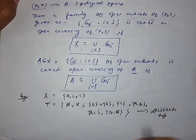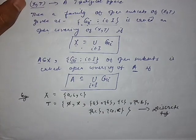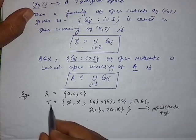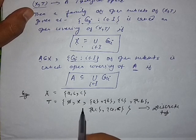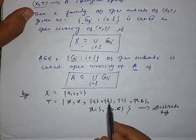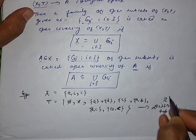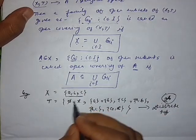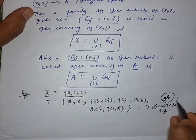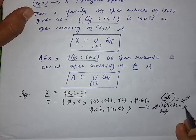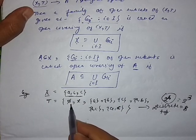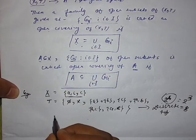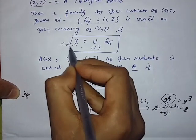The discrete topology is the largest topology on any set. The elements of any topology are called the open subsets of that topology. The number of open subsets in the discrete topology is equal to 2^n, where n is the number of elements in the set. Here n = 3, so it equals 2^3 = 8, giving us 8 open subsets.